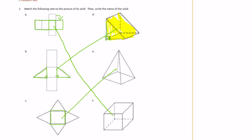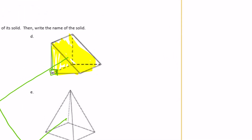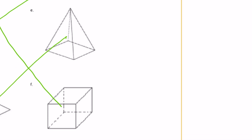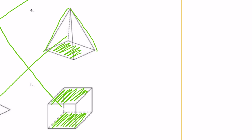Now we need to write the name of the solid. We classify things based on their bases. Something is either a prism or a pyramid. A prism has two bases that are the same. A pyramid — maybe you've studied it in social studies, like the ancient pyramids — comes to a point. So a pyramid only has one base and then it comes to a point.